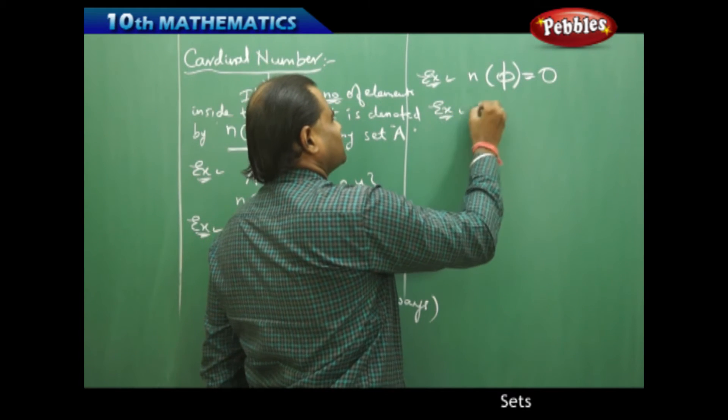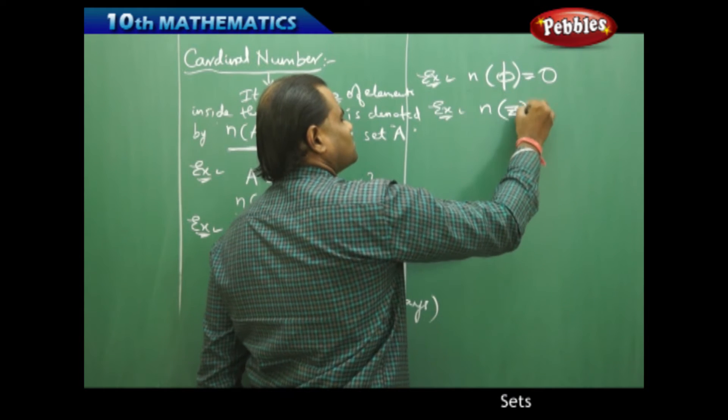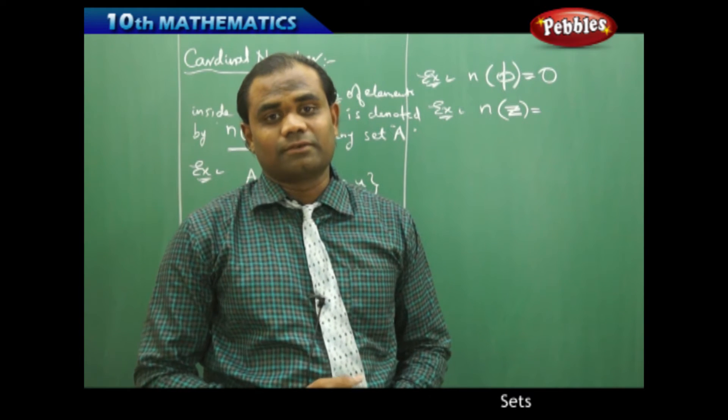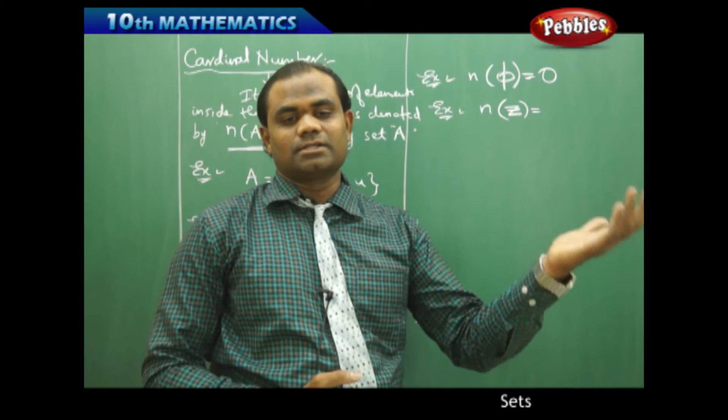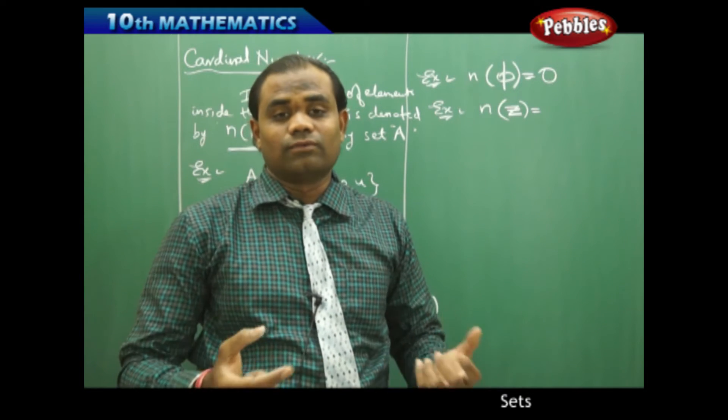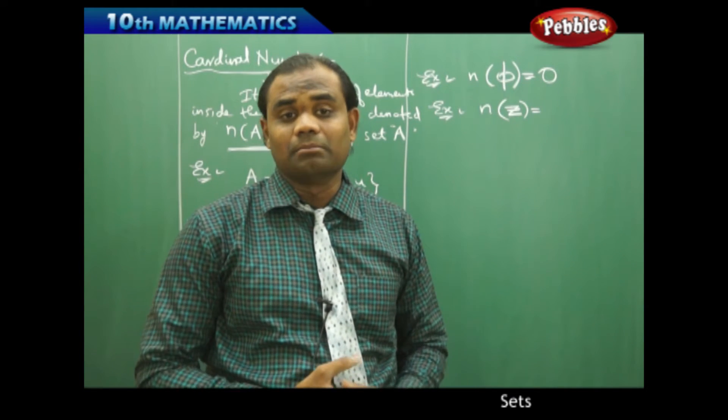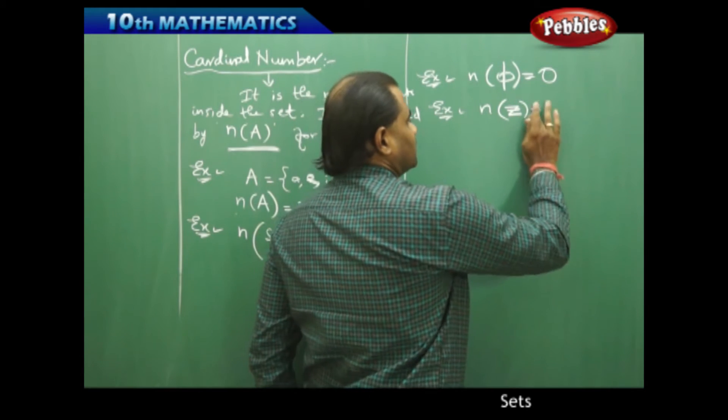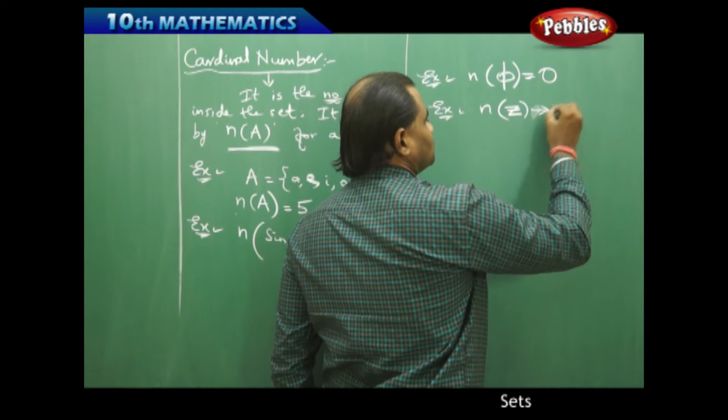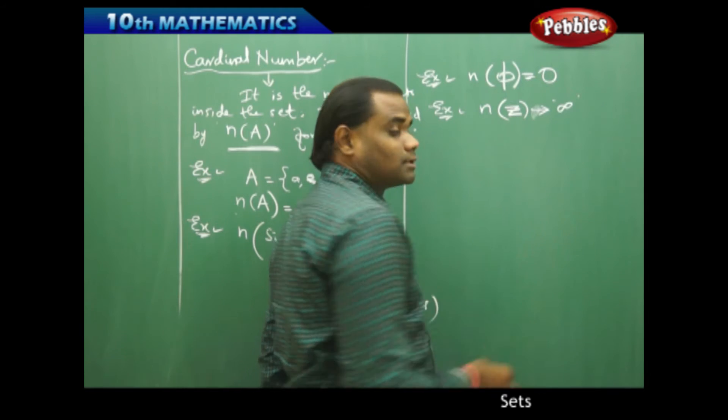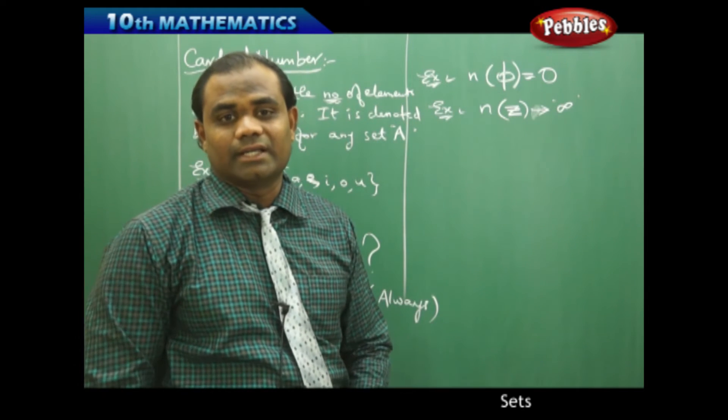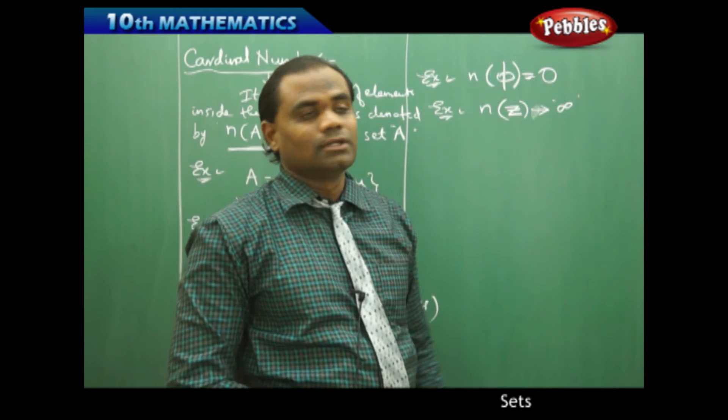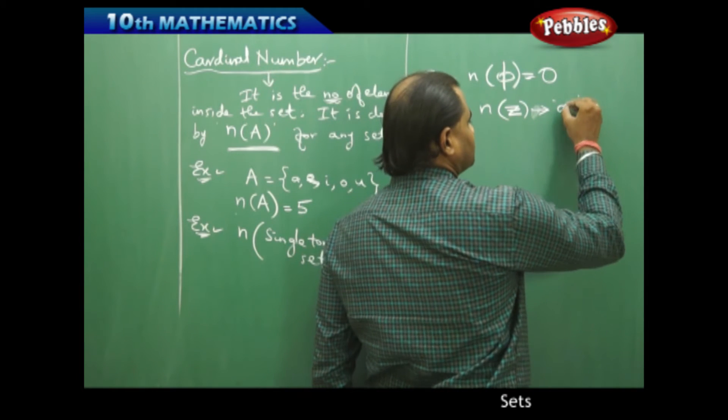Say I take the cardinal number of integers. The numbers which we identify in integers range from minus infinity to infinity. Therefore, there are infinitely many numbers which exist in integers. The cardinal number of Z tends to infinity. We cannot exactly identify the exact value.